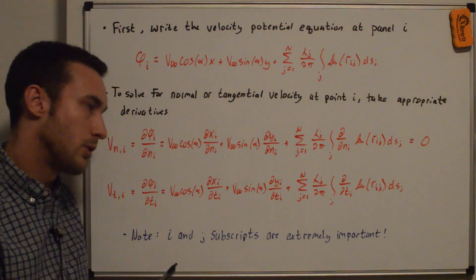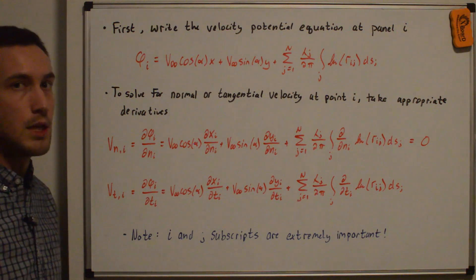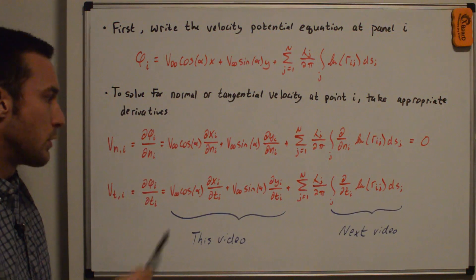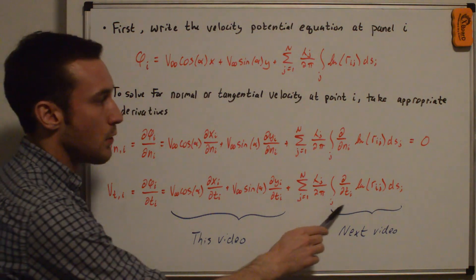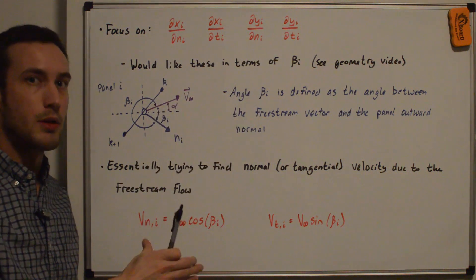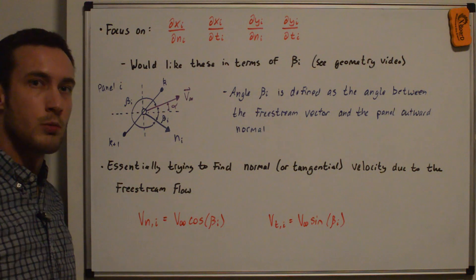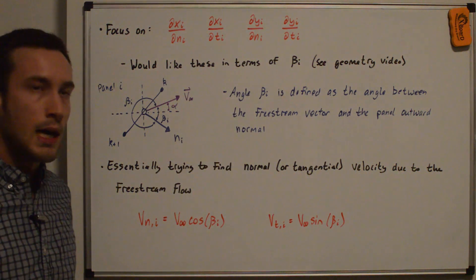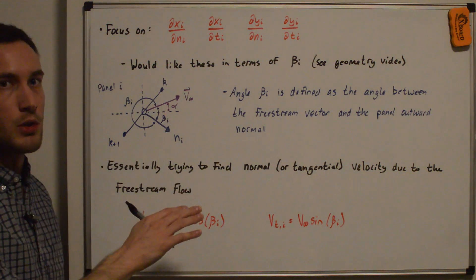Note that the i and j subscripts are extremely important and can trip you up, so make sure it's clear which is i and which is j. For the rest of this video, we'll focus on the uniform flow terms to evaluate what these partial derivatives are. The next video will focus on the integral term, which is more detailed. We need expressions in terms of beta_i, mainly because we've already solved for beta_i in the panel method geometry section — see that panel method geometry video.